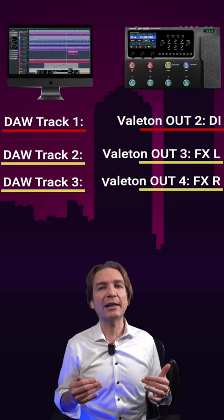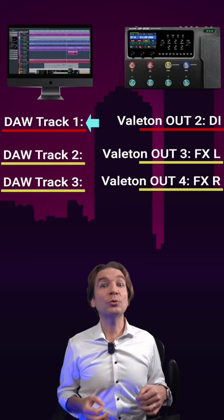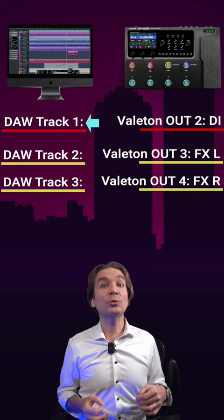In this way, in your DAW you're going to have track 1 to be used to record the dry guitar that you can re-amp later. Tracks 2 and 3 will have the stereo sound coming from the GP200 with all the amp sim and the effects that you have activated in the Valetton itself.